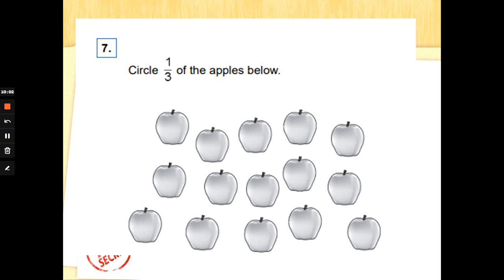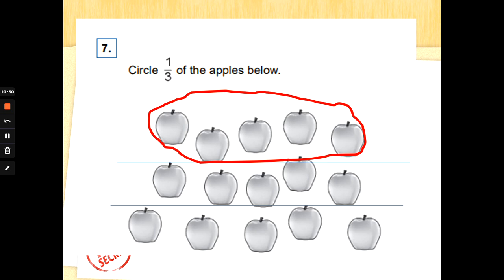Number seven. Circle one third of the apples below. Now this is a really hard question type. This isn't asking you to put them into groups of three. It's asking you to split them into three equal groups. I'm going to draw a line and go across. See if I can get three groups. I've got a top group, a middle group, and a bottom group. Then I'm going to check how many apples are in each group to see if they are equal. One, two, three, four, five apples in the top group. One, two, three, four, five apples in the bottom group. One, two, three, four, five apples in the bottom group. So that's equal. If I circle one of the groups of five, that's one third, I will get the mark for that.